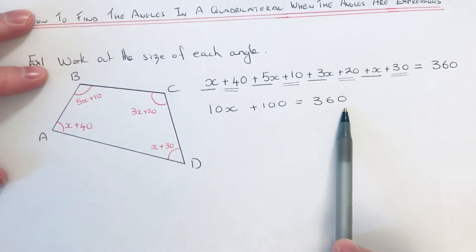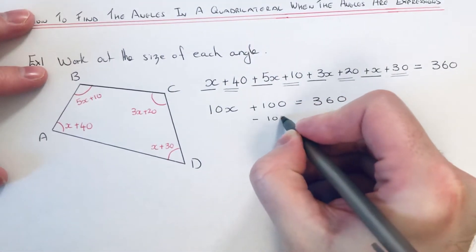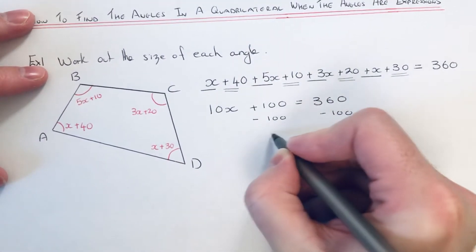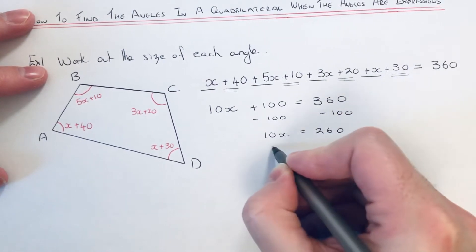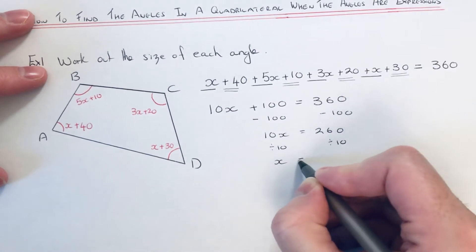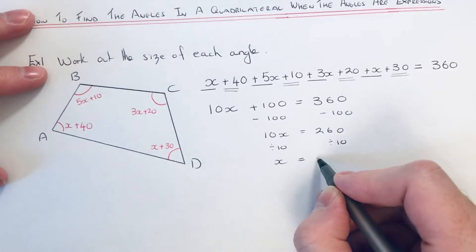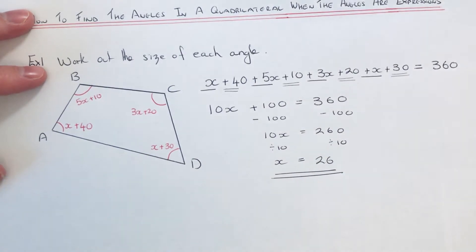So we now just need to do the inverse operations to work out the value of x. If we take 100 off both sides, that will give 10x equals 260. And then divide both sides by 10. So 260 divided by 10 is 26. So our value of x is 26.